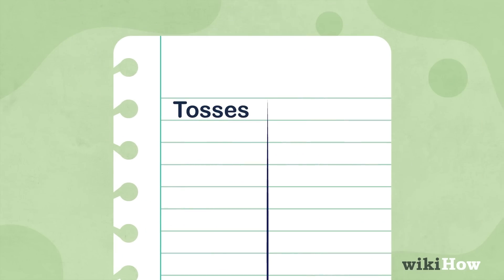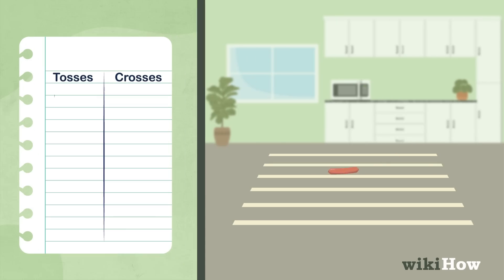On a piece of paper, make a column for tosses and another column for crosses. The tosses column is where you'll keep track of how many times you throw your food item. The crosses column is where you'll keep track of how many times your item lands across one of the lines.